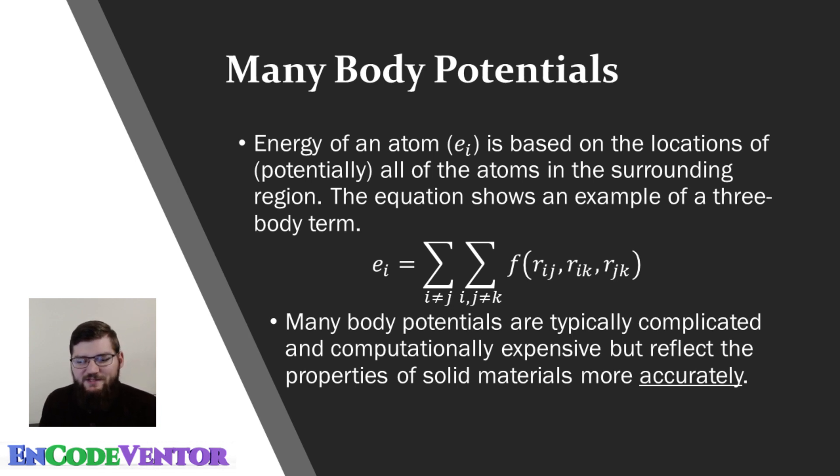So the result is you have this double summation, which is usually a double for loop in your code. And they're typically quite a bit more expensive to calculate, but they do reflect the properties of especially solid materials much more accurately.